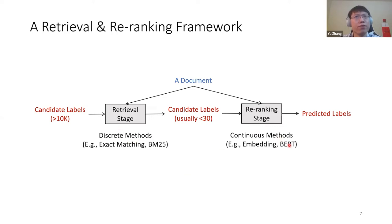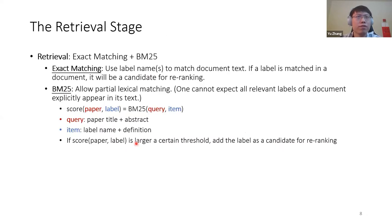Let's start from the retrieval stage. Actually, still quite simple heuristics here. Exact matching plus BM25. By exact matching, we mean that we use label names to match document text. If a label is matched in a document, it will be a candidate for re-ranking. Of course, we cannot rely on exact matching alone because one cannot expect all relevant labels of a document explicitly appear in the text. So we need to allow partial lexical matching. Here still for each paper we find its relevant labels. So the query is paper title plus abstract and the item is the label name plus definition. So if the BM25 score between these two things is larger than a certain threshold, we add the label to the candidate pool. So that's the retrieval stage.